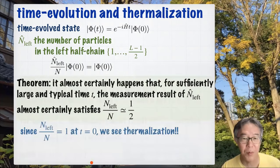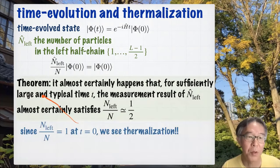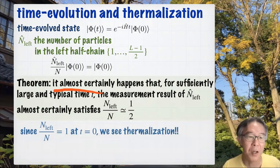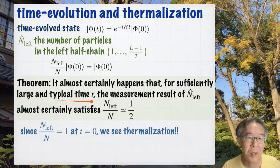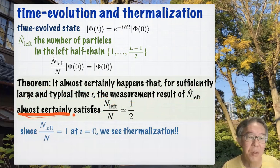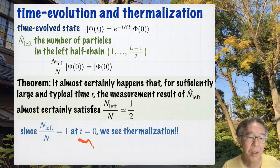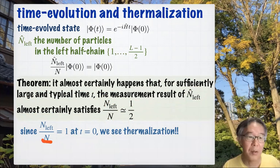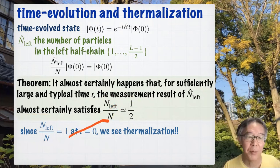Let me rephrase this in a less formal manner. The theorem basically says that when n is large, it almost certainly happens that for sufficiently large and typical time t, the measurement result of N_left almost certainly satisfies N_left/N ≈ 1/2. And of course, we started from the non-equilibrium state where N_left/N = 1. This means that we started from non-equilibrium and reached equilibrium state — so we see thermalization.